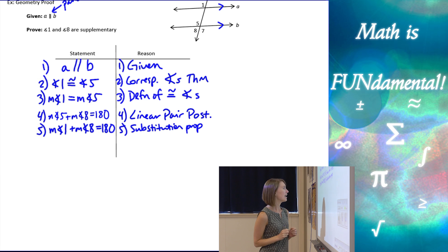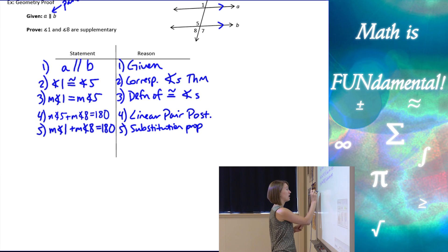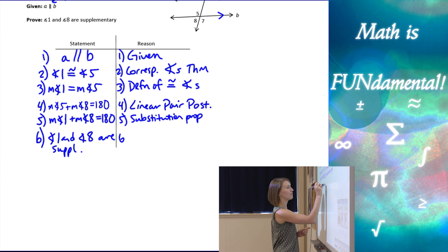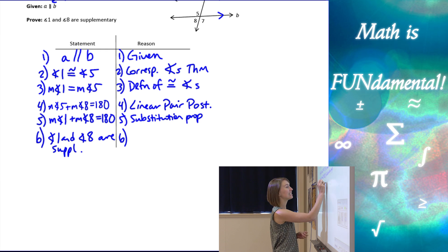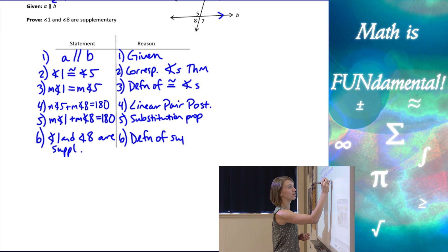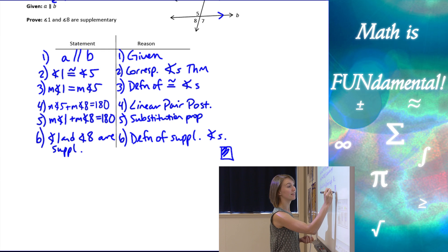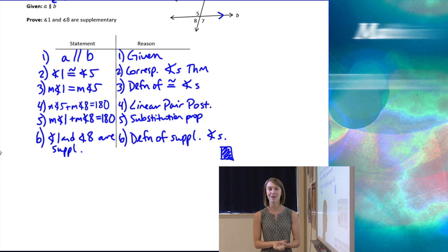We're almost done. We have that the measure of angle one plus the measure of angle eight equals 180, which is what supplementary means. But we need to write exactly what we set out to prove: angle one and angle eight are supplementary, justified by the Definition of Supplementary Angles. We went from our given information to what we needed to prove in six steps, and we're done. That concludes our lesson — thanks for watching, and remember, math is fundamental.